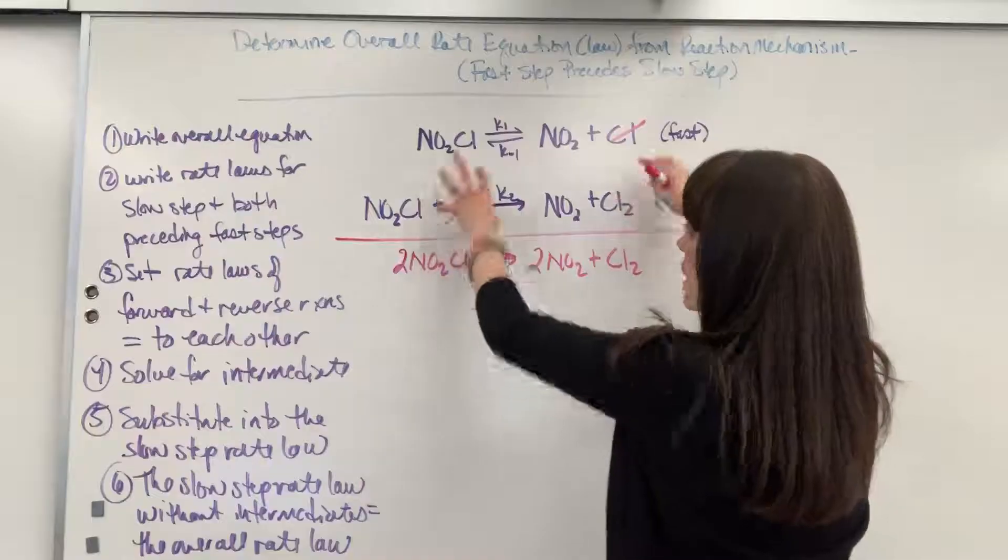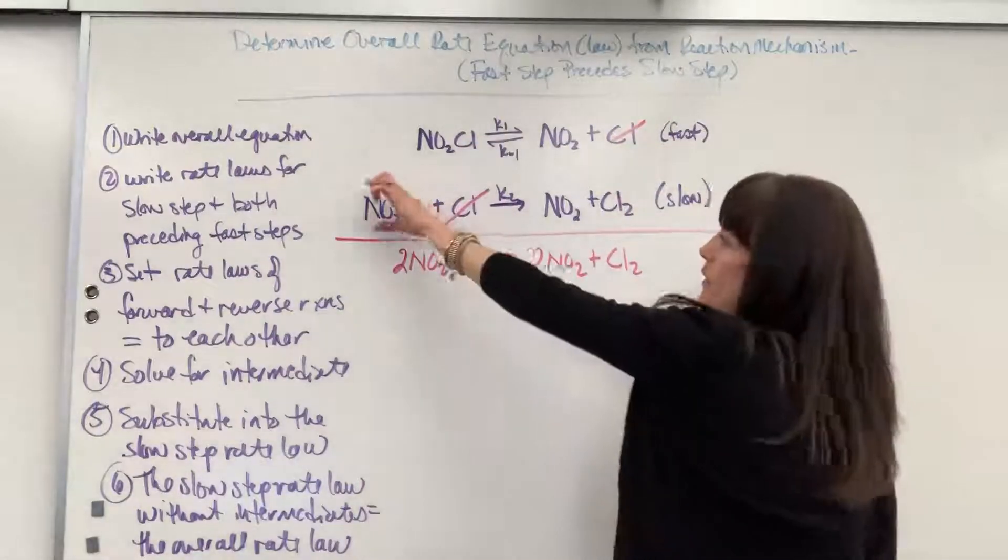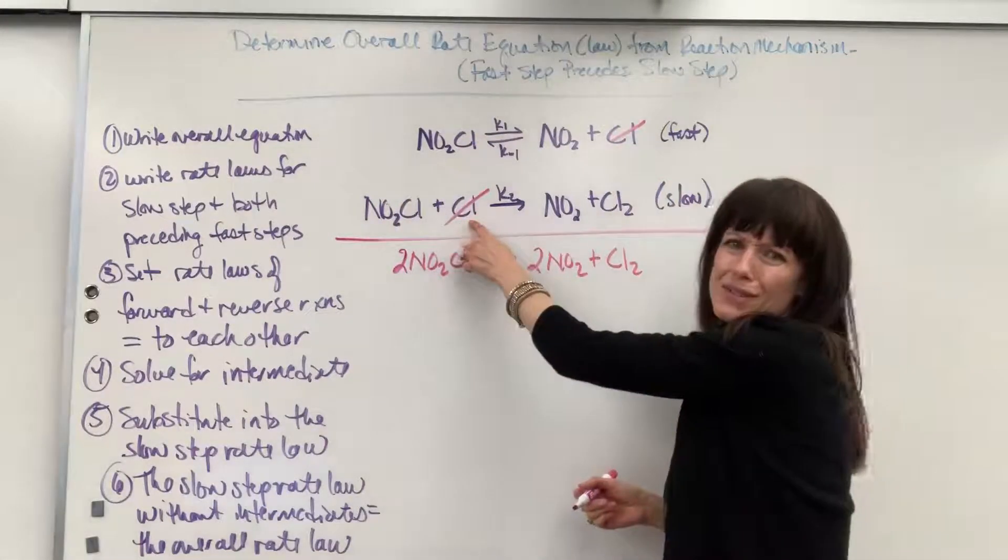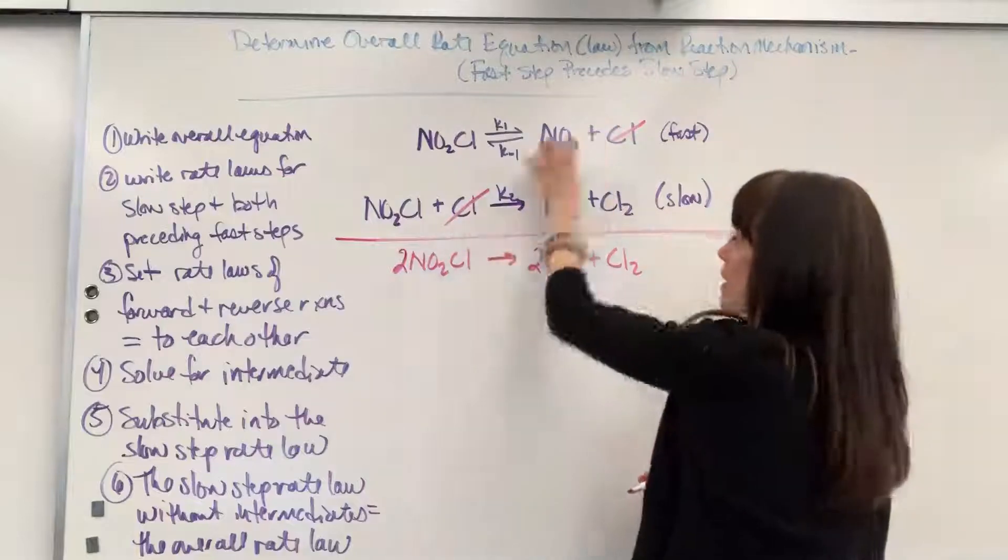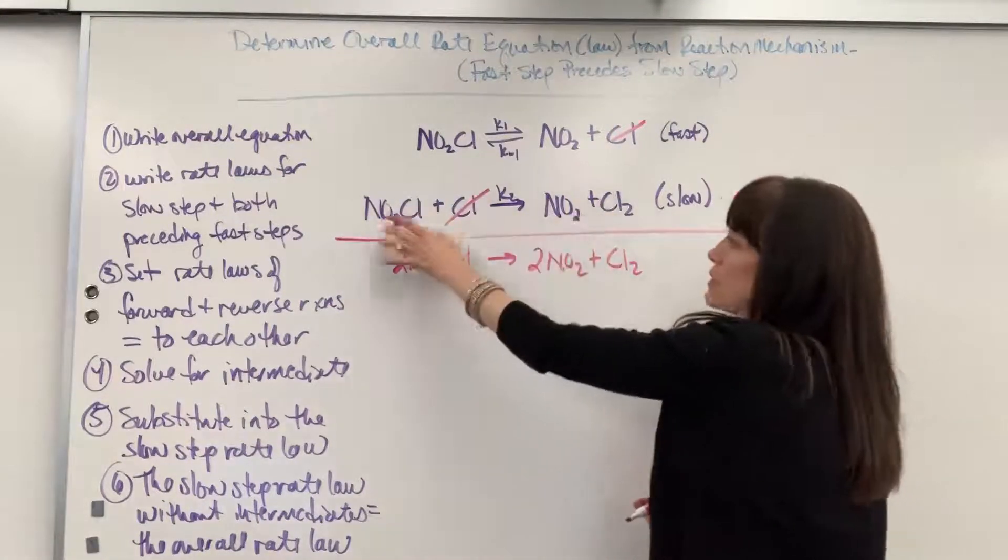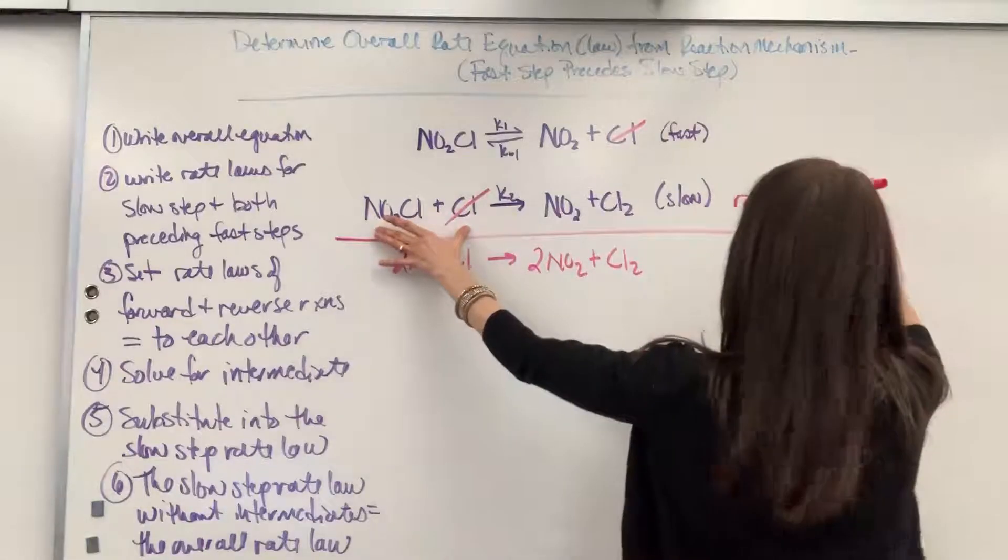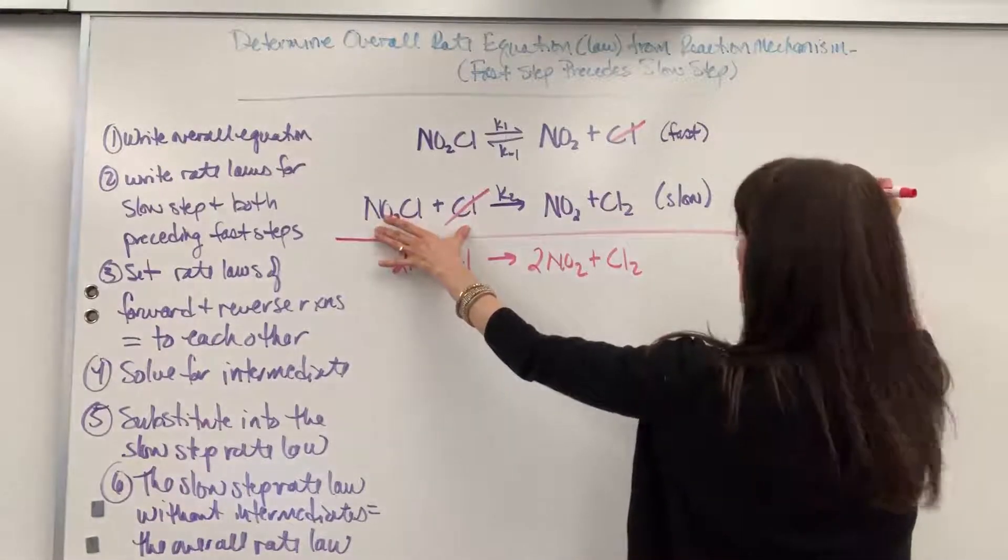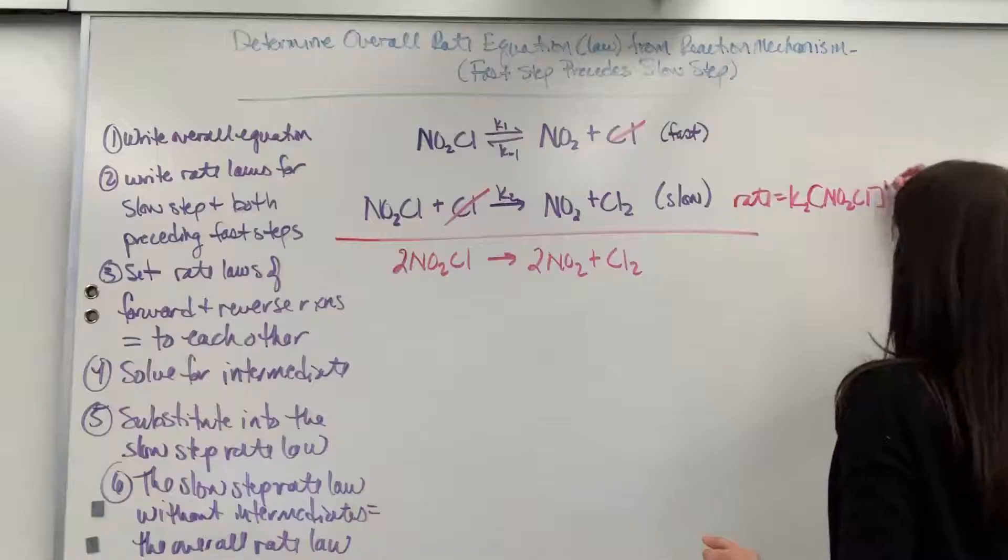I crossed those out because I added it together, but if I'm just looking at this, that hasn't canceled. That chlorine is still there. I'm looking at this entire equation to get the rate law. So we are going to have NO2Cl to the 1.